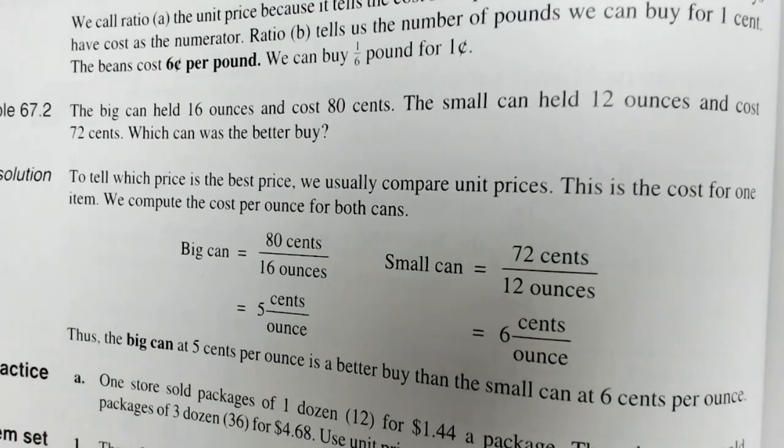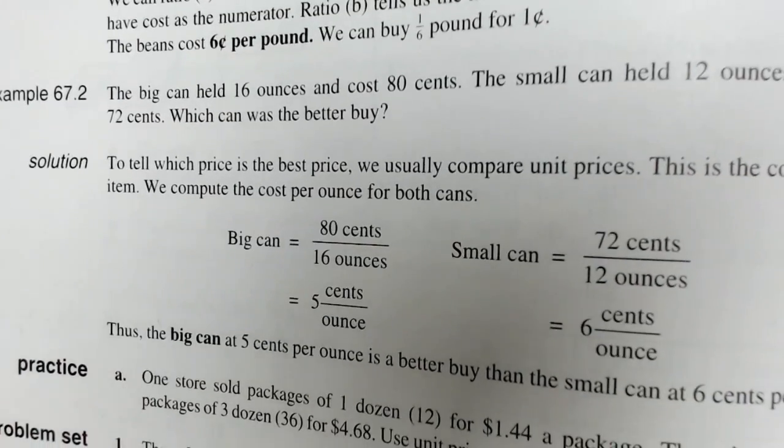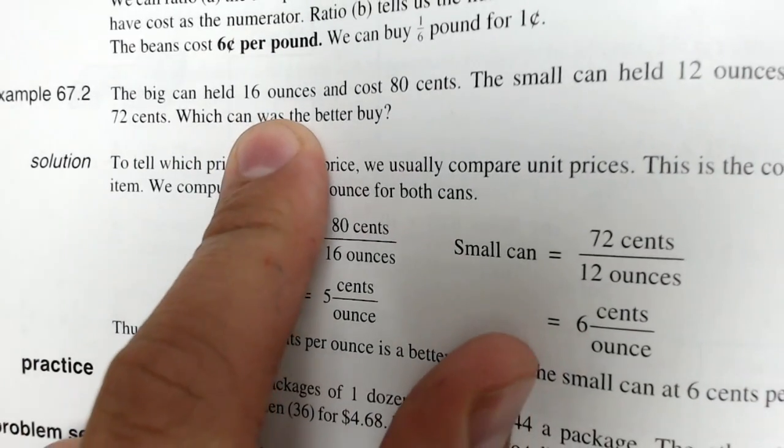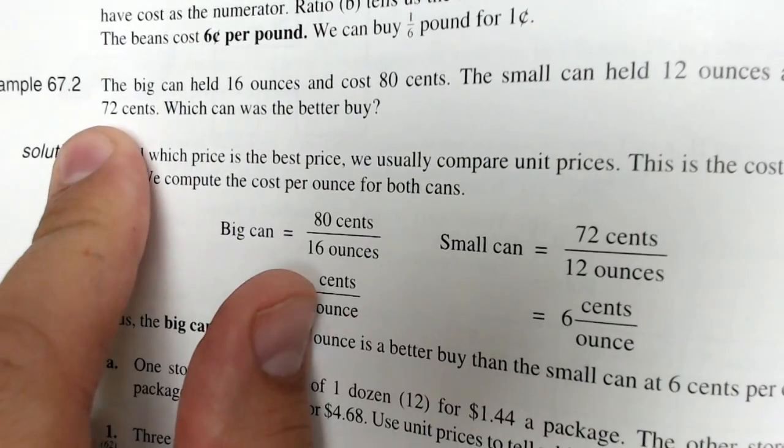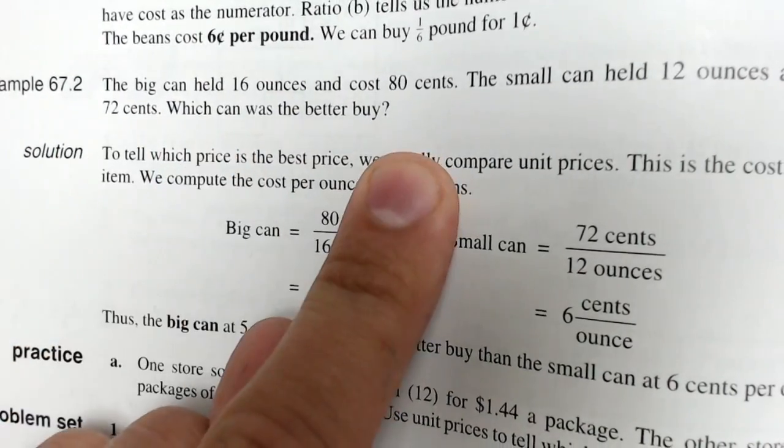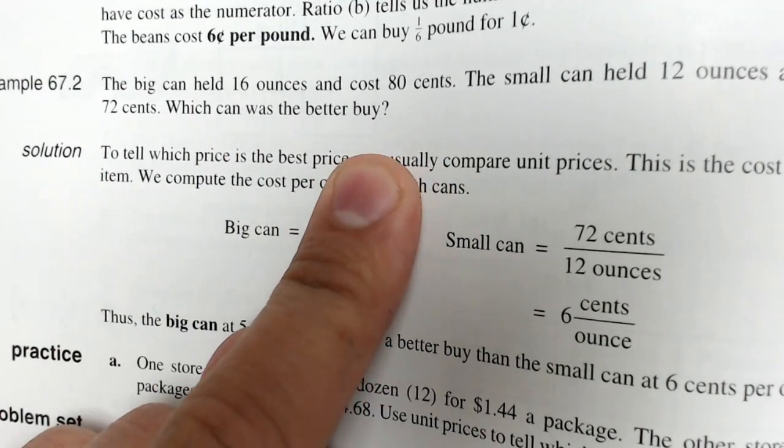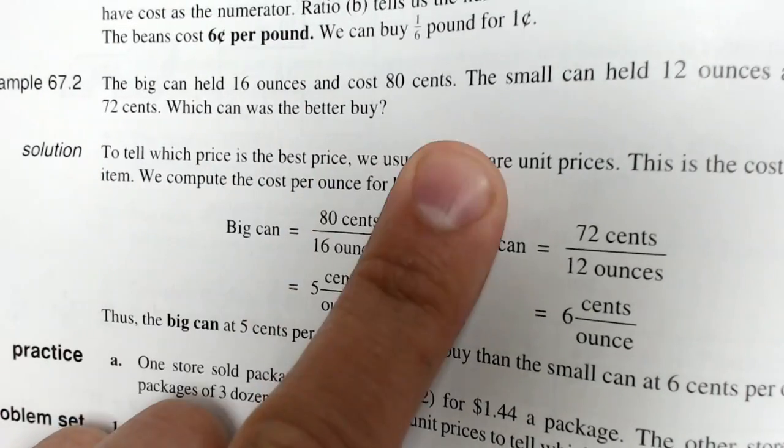Example two: the big can held 16 ounces and cost 80 cents. The small can held 12 ounces and cost 72 cents. Which can was the better buy? So which one gives you the more bang for your buck?